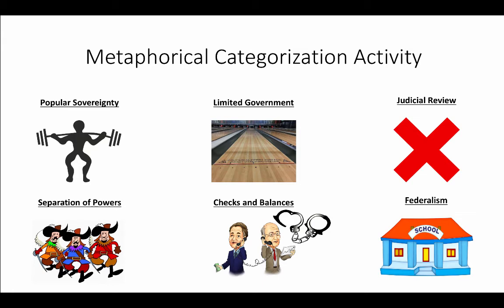For judicial review, there's just a big X, because judicial review is essentially the main power of the Supreme Court — to declare something unconstitutional. Students could argue it could go into a few other categories too, so their argument really matters. For separation of powers, I found the best free picture of the three musketeers I could. Each musketeer has their own thing they're good at, but together they get a lot done — without one outshining the rest.